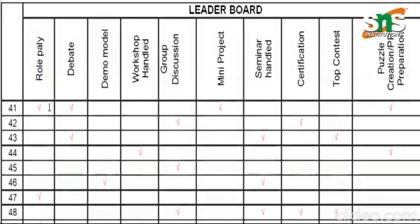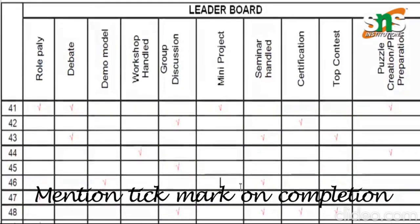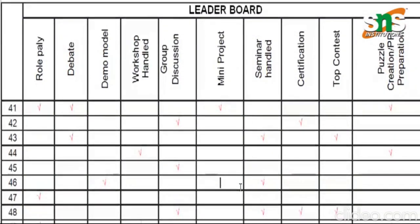Any component that is being done by the student in the class, the faculty has to put a tick mark against the enlisted role number of the student who has performed. It is not necessary that all the students have to take part in all the components. Based on the student's capability, he or she would excel in any one of the components. For every component the student has undergone, the teacher has to make sure to put a tick mark in their log book against the role number who has attained it.